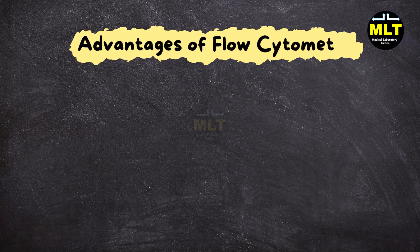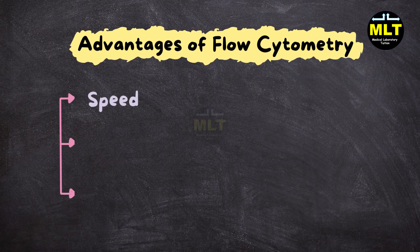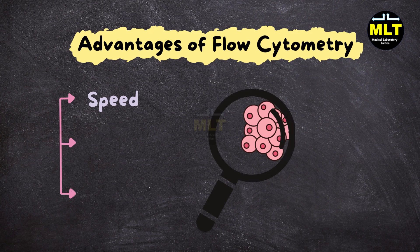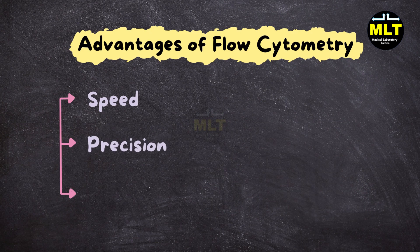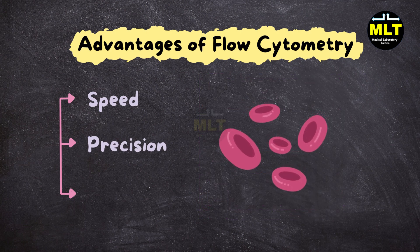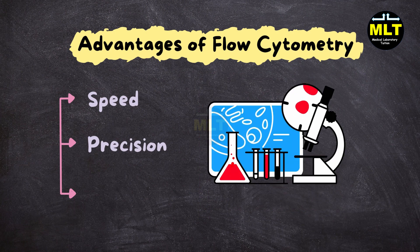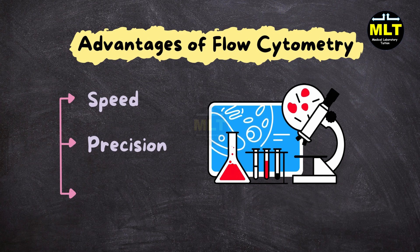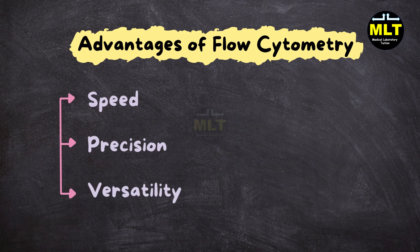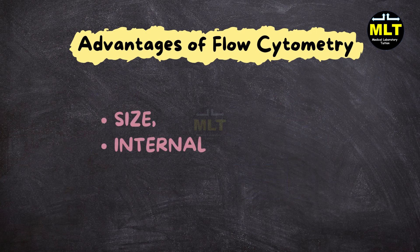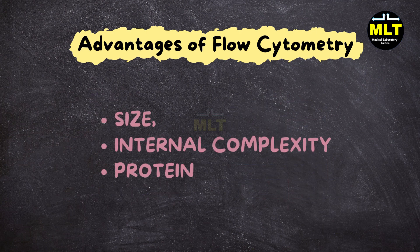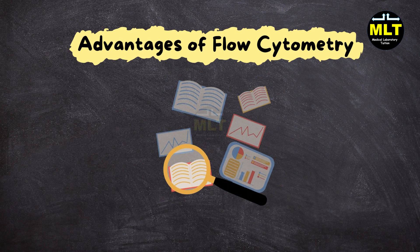Advantages of flow cytometry. Flow cytometry offers three main advantages that make it invaluable in modern labs. Speed: it can analyze thousands of cells in just seconds, making it incredibly fast and ideal for high-throughput labs. Precision: we get cell-by-cell data, allowing detailed study of each cell's characteristics in complex samples. Versatility: flow cytometry can measure multiple characteristics of cells simultaneously — such as size, internal complexity, and protein markers — making it adaptable to diverse research and clinical needs.